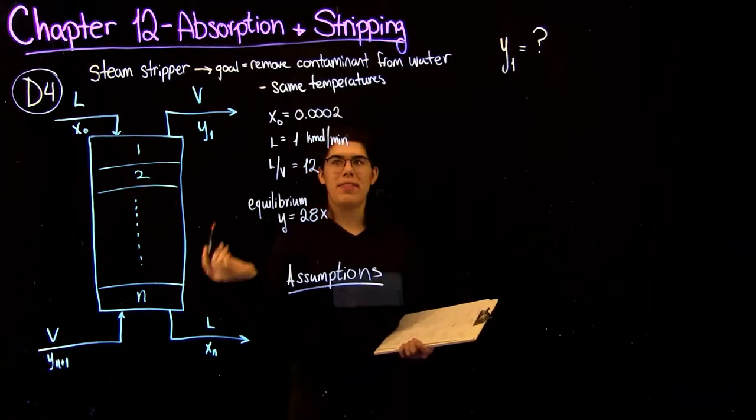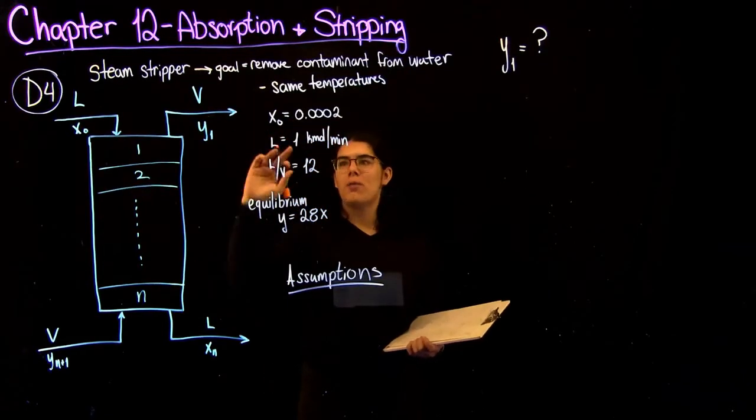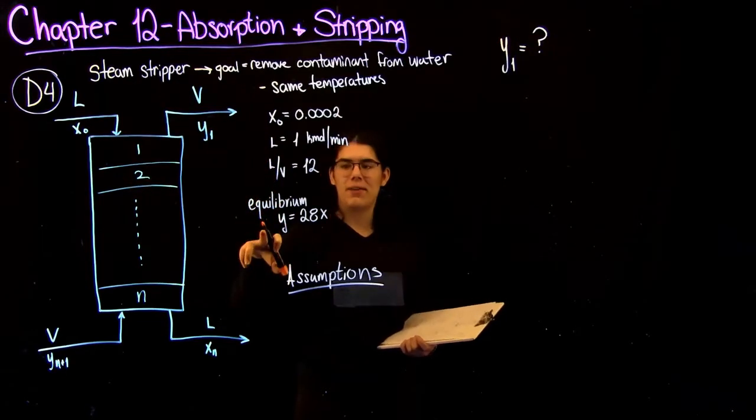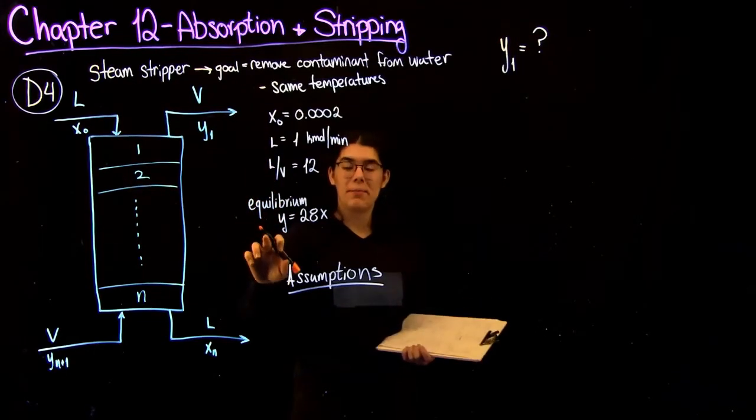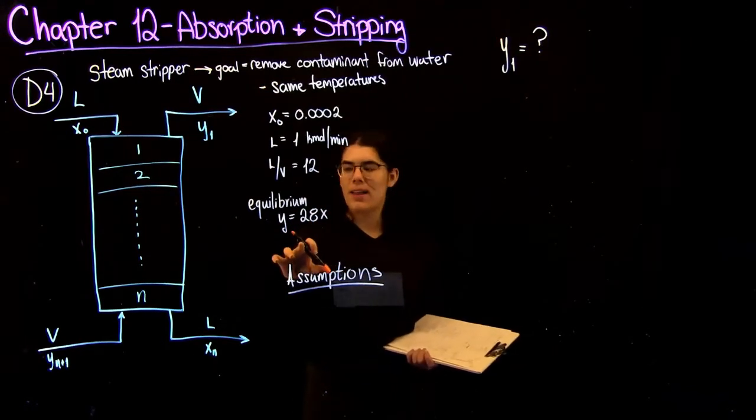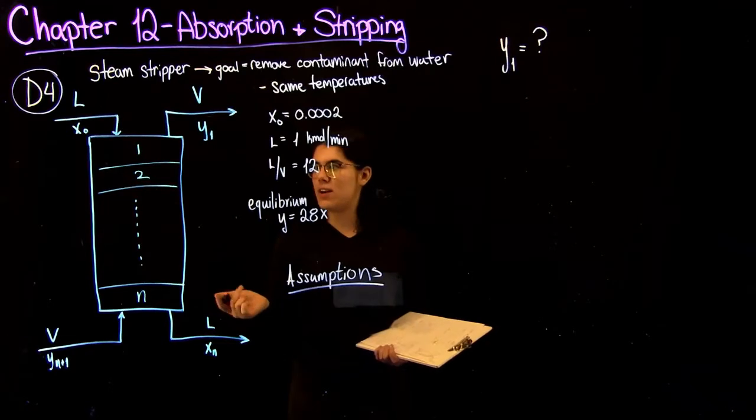So in this question, we're given that we have the same temperatures, we're given the entering composition, as well as the flow rate. We're given the L over V, so it's the equilibrium line. So in this case, the equilibrium line is actually linear, and you're not going to need to take data from the table like you would for a lot of other distillation columns.